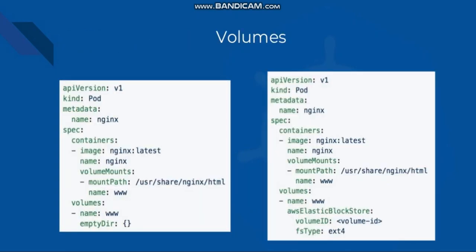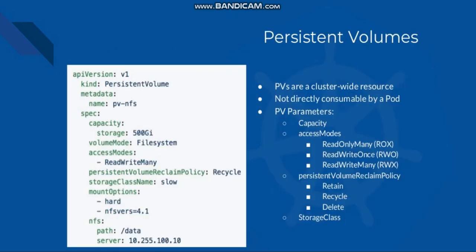Storage classes are an abstraction on top of external storage resources. They include a provisioner, provisioner configuration parameters, and a PV reclaim policy. You can see the volumes in this YAML file. For the persistent volume YAML file — I have given the name PV-NFS-storage, 500 GB volume, filesystem access mode read-write-many, persistent volume claim policy recycle, storage class name slow, mount option hard, NFS server version, NFS path, and one of the server data.